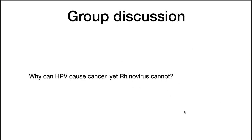Two questions for group discussion. Why can HPV cause cancer, yet rhinovirus cannot? The reason is that rhinovirus is an RNA virus and does not insert into the genome. The HPV virus is a DNA virus that inserts into the genome, alters the cell cycle, removes some of the regulation of the cell cycle, and then causes the cells to become cancerous.